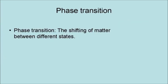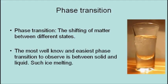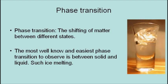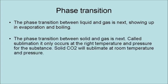A phase transition is a shift of matter between different states. The most well-known and easiest phase transition to observe is between solid and liquid, such as ice melting. The phase transition between liquid and gas is next, showing up in evaporation and boiling. The phase transition between solid and gas is next.